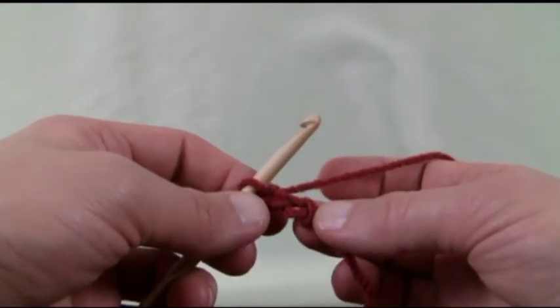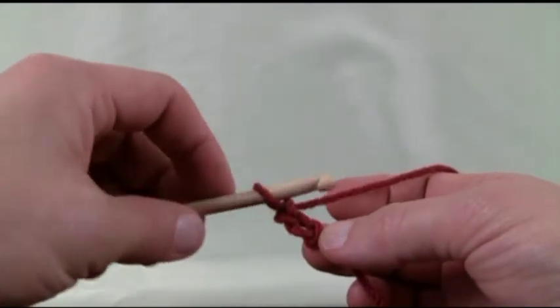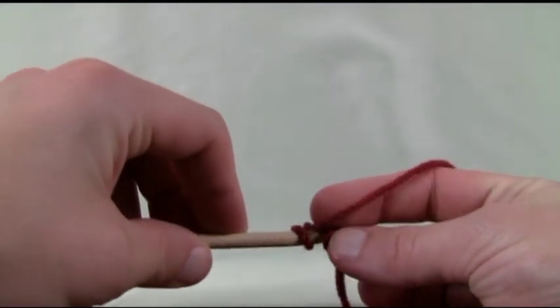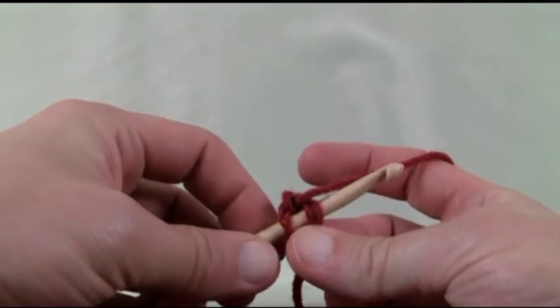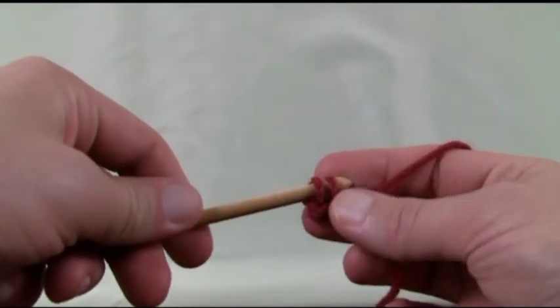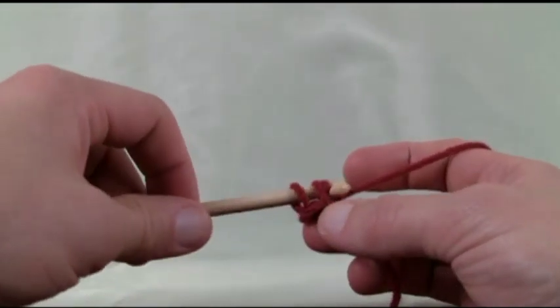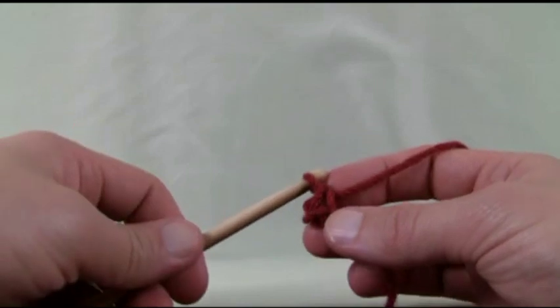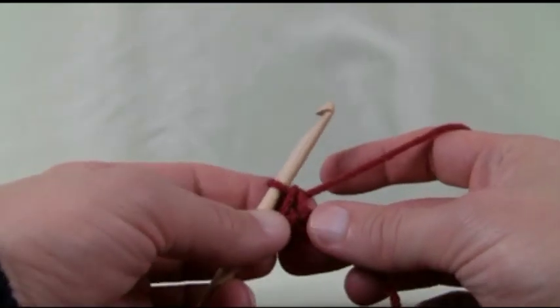Now what we need to do is go back to the very starting stitch and stick in your hook. Go right into the starting one and grab the yarn again, pull it through. Now you'll have two on your hook. Now pull through those two and this is the start of your foundation.